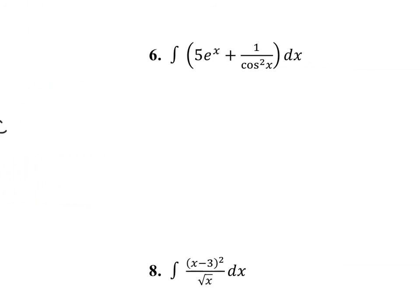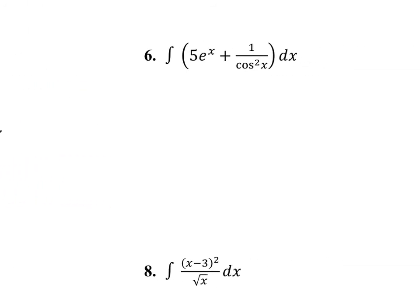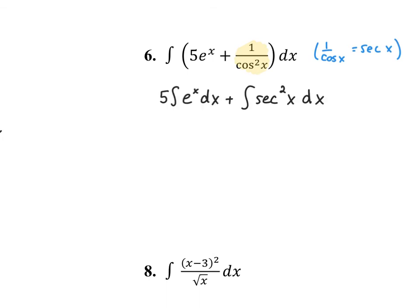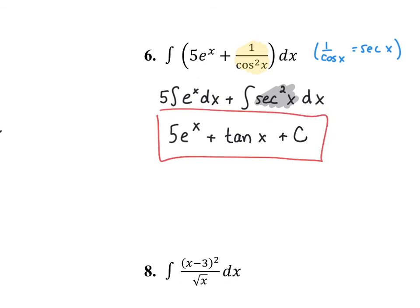In question 6, I see 1 over cosine squared x, which isn't immediately recognizable. But recall the reciprocal identity: 1 over cosine x equals secant x, so I can rewrite it as secant squared x. For the first term, I pull the constant 5 outside and the antiderivative of e to the x is 5e to the x. For the second term, I recognize secant squared x as the derivative of tangent x. Along with plus c, that's the final answer.